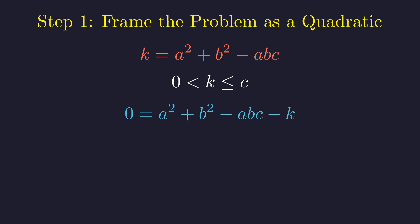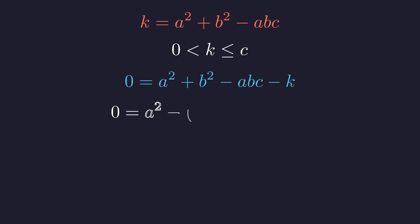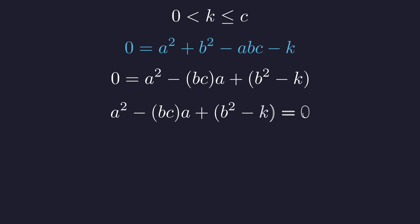We have the quadratic term, the linear term, and the constant terms. This rearrangement reveals the beautiful quadratic structure in the variable a. Flipping it around gives us standard form. This quadratic equation with integer coefficients is the engine that will drive our entire proof.